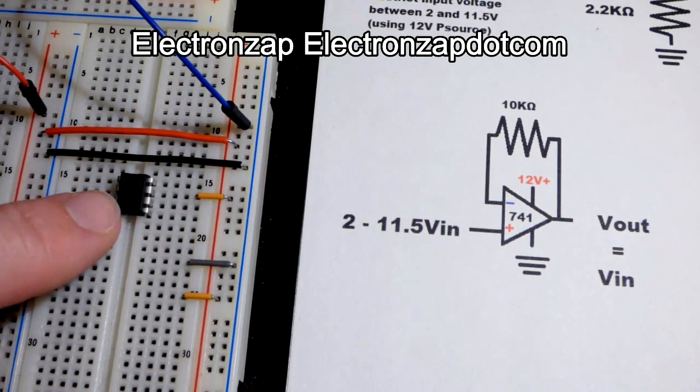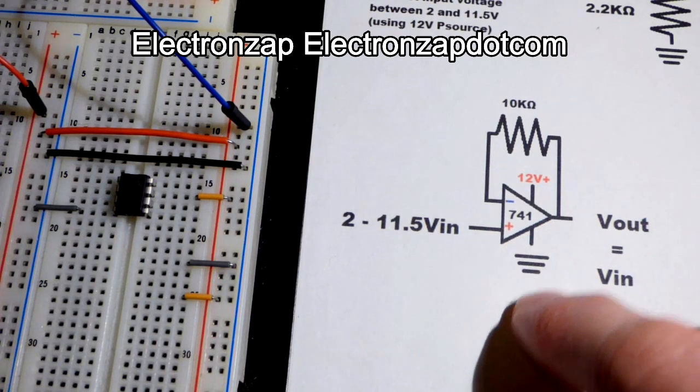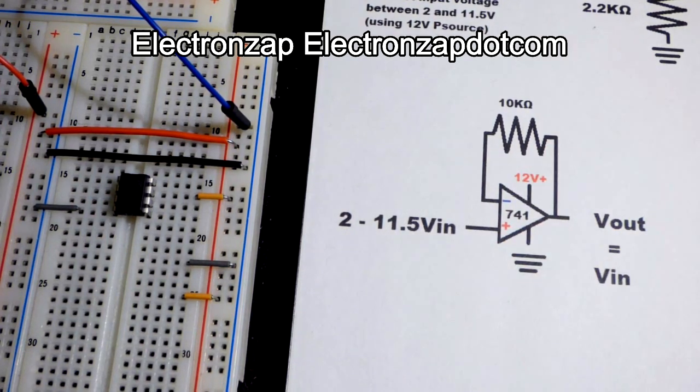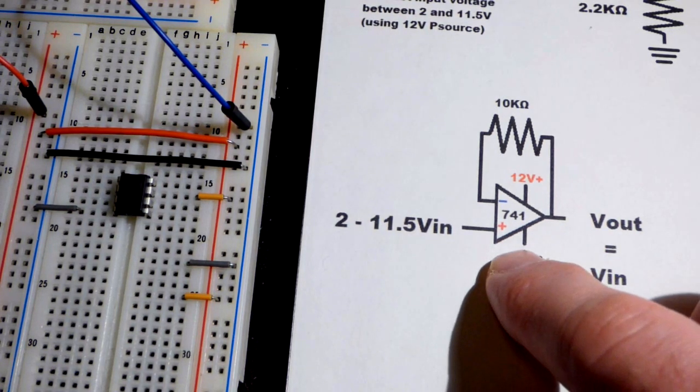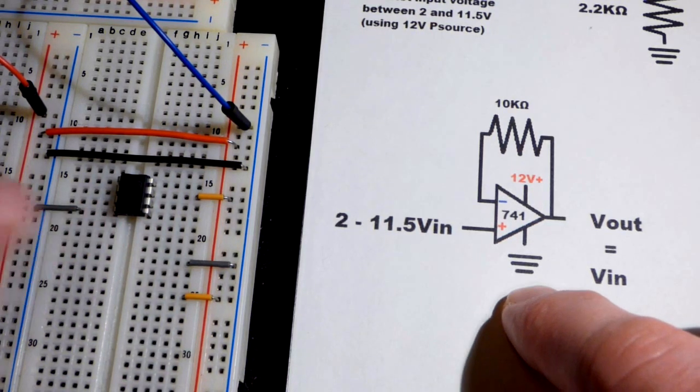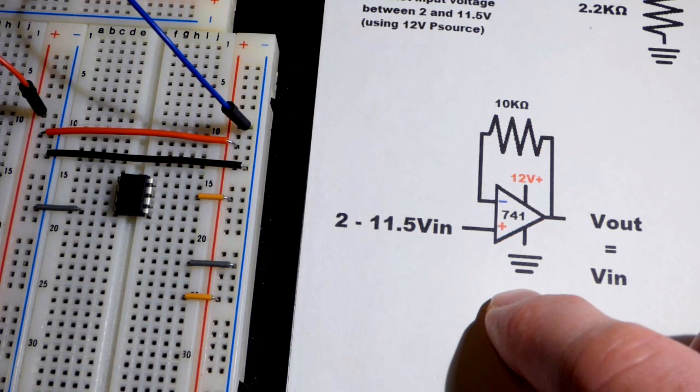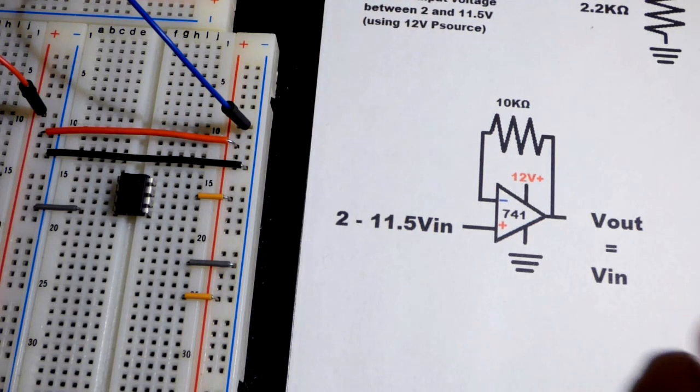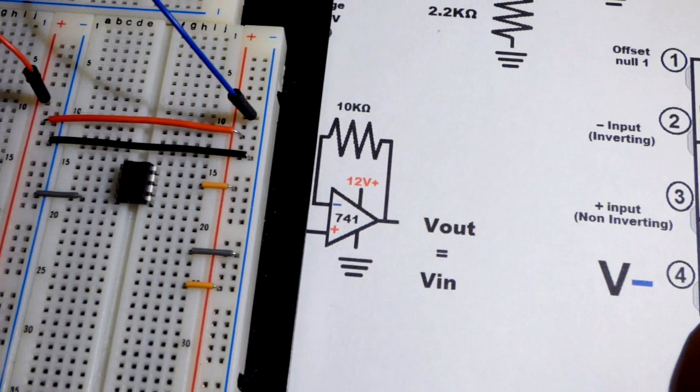In this video we're going to take a 741 op-amp, there's the schematic symbol there, and using this basic layout which I got from the Texas Instruments UA741 datasheet. Unfortunately the Texas Instrument UA741 that I have doesn't work, so this is a different one from ST Micro Electronics, but it should work exactly the same if they're working.